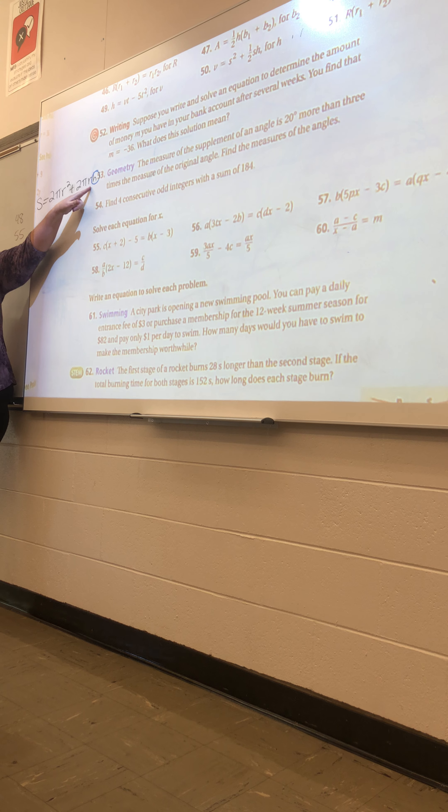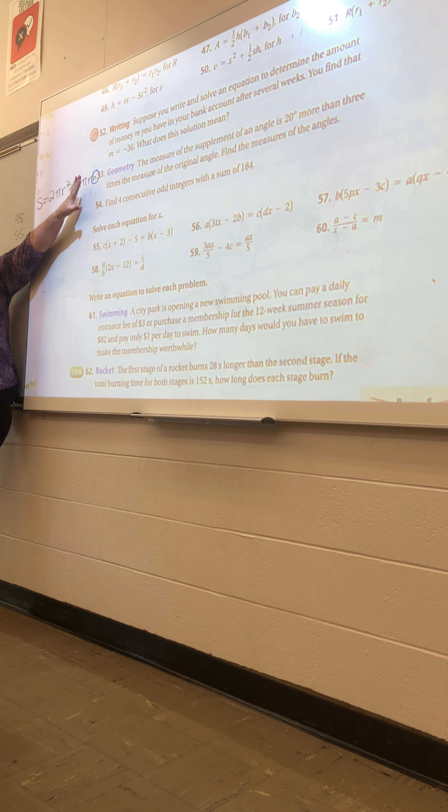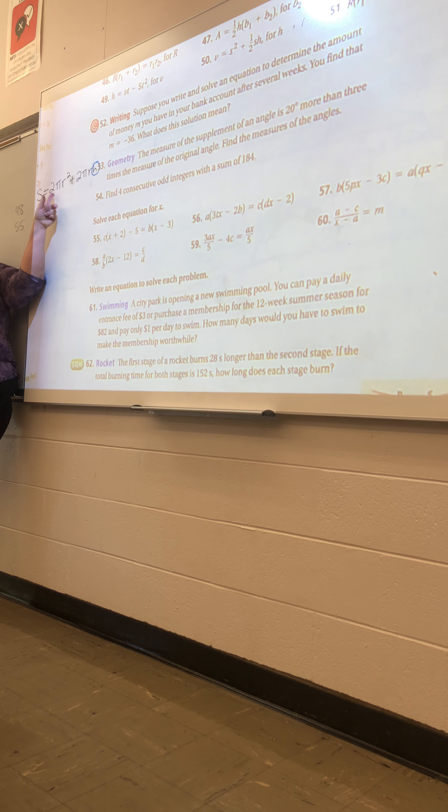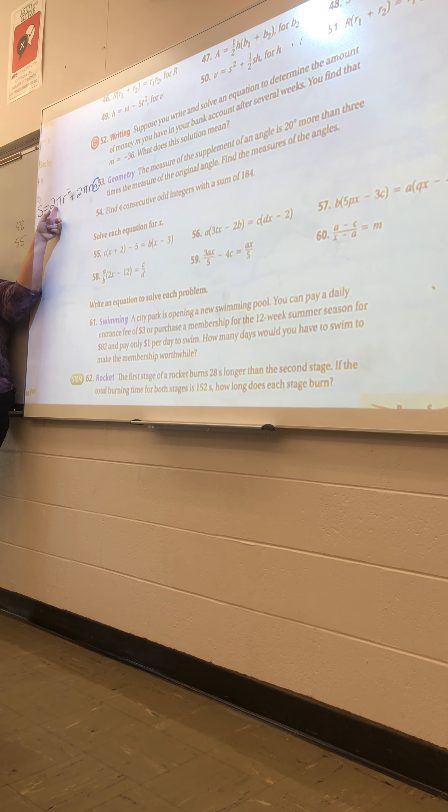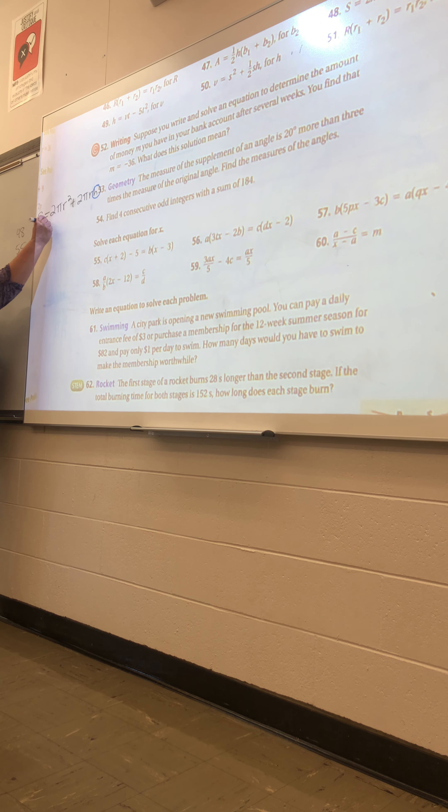Since these are all multiplied together, we don't want to do anything with the 2 pi r yet. Since the 2 pi r squared is added to this whole thing, we want to subtract it off. So you subtract the whole thing off at one time.